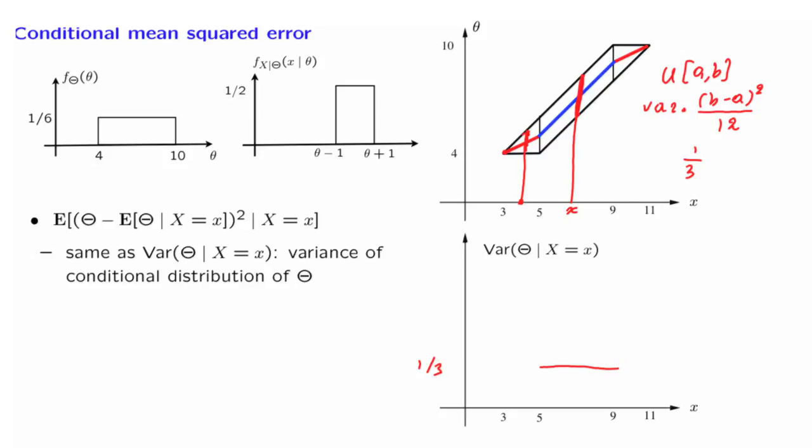At the extreme case when x equals 3, this interval has zero length. In fact, we have perfect certainty about the value of theta. If x equals 3, then we know theta equals 4. There's no uncertainty, there's zero variance.